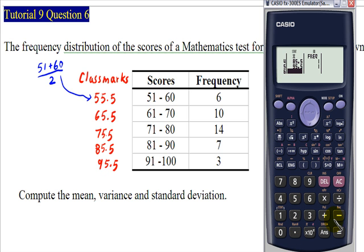Once we finish the class marks, we go to the right and go all the way to the top to enter the frequency. The first frequency is 6. Then equal. Second frequency is 10. Then equal. The third frequency is 14. Then equal. And the fourth frequency is 7. Then equal. The fifth frequency is 3. Then equal.